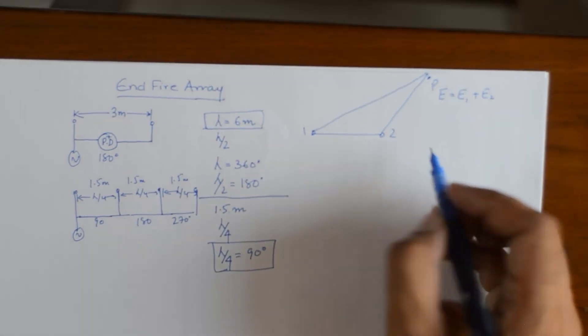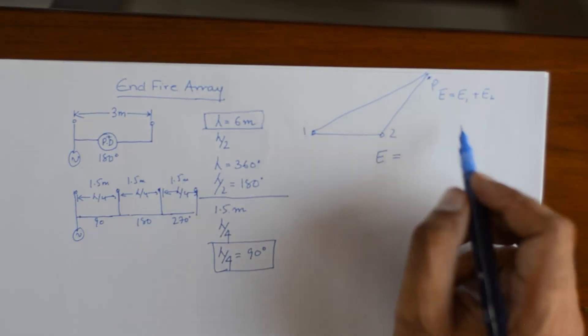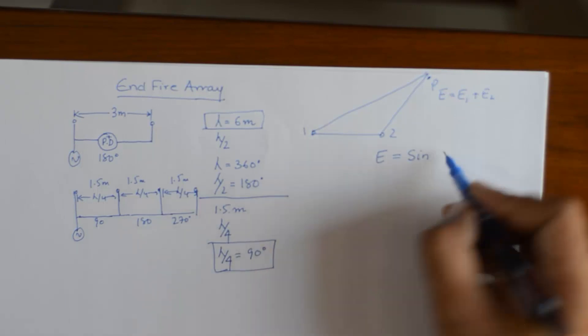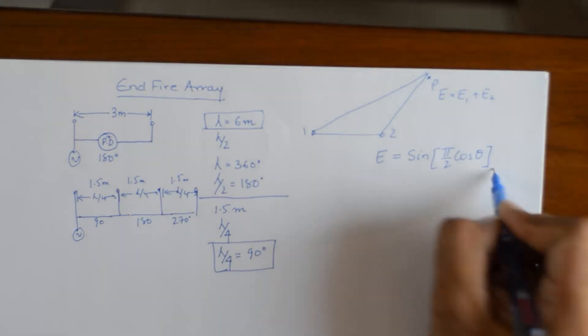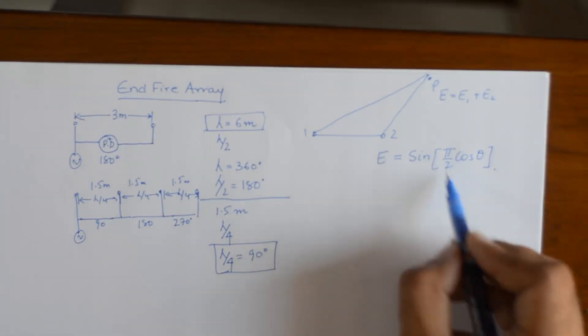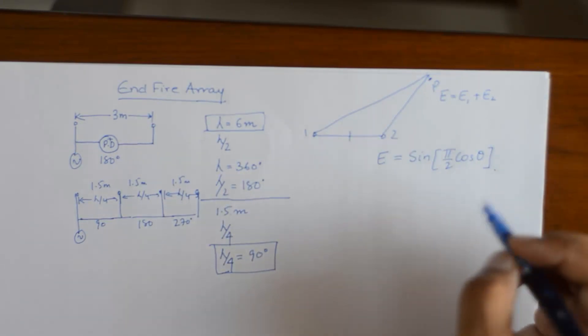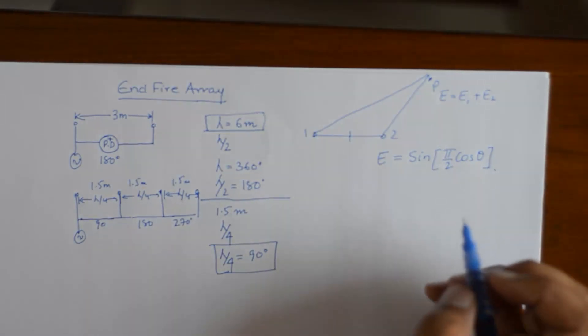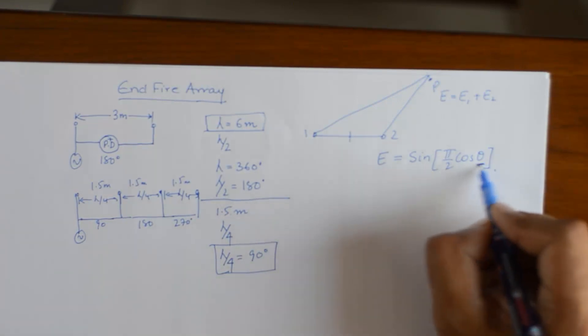And in case of endfire array, the normalized electric field intensity becomes equivalent to sine of pi by 2 cos theta. Now if you remember the case of broadside array, it used to be cos of pi by 2 cos theta.